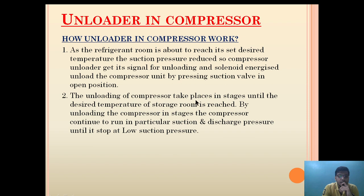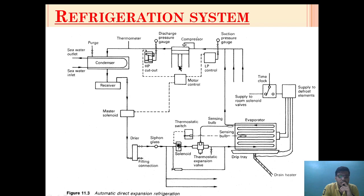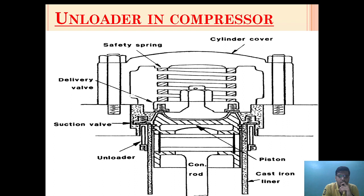The unloading of the compressor takes place in stages until the desired temperature of the storage room is reached. By unloading the compressor in stages, it continues to run at a particular suction and discharge pressure until it trips at low suction pressure. The compressor will continue its operation until the other room temperatures are also attained. Once all room temperatures are attained, a pressure is reached where it cannot be operated further — at that point, the LP trip will automatically get reset as the pressure in the line increases. I hope the concept of the unloader is clear.